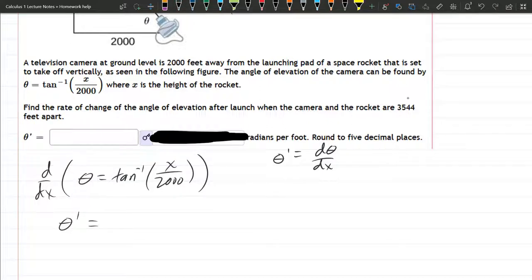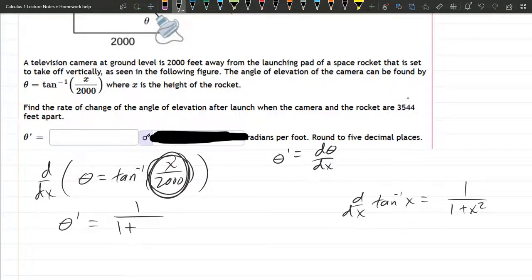Now the right side derivative of tangent inverse, hopefully you remember that. d dx, if you just had tangent inverse x, it's 1 over 1 plus x squared. So for us, it's 1 over 1 plus the inside squared. That whole thing gets squared.